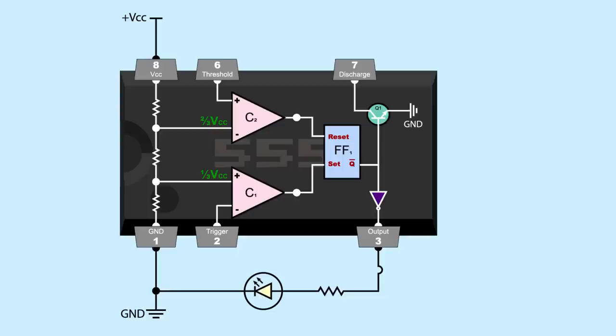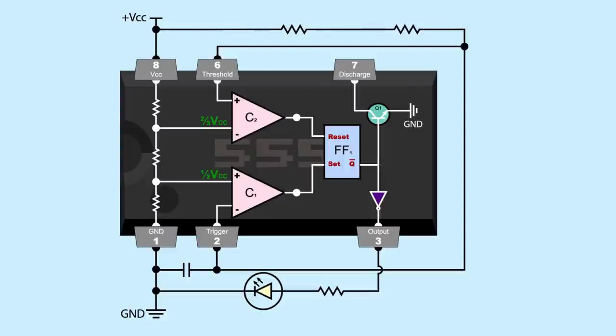Now let's talk about how to add external components to build an astable circuit. For this circuit, pins 2 and 6 are tied together. This means they will always have the same voltage. A capacitor is added connecting them both to ground. The voltage supplied to pins 2 and 6 is determined by that capacitor's voltage. Both pins are also connected to VCC through a couple resistors. Between the two resistors, a connection to the discharge pin is added.